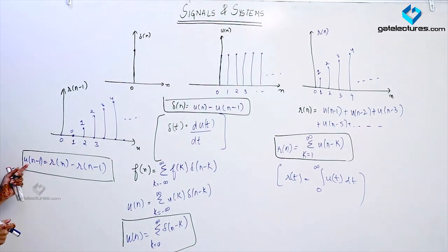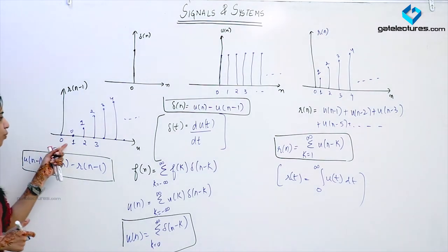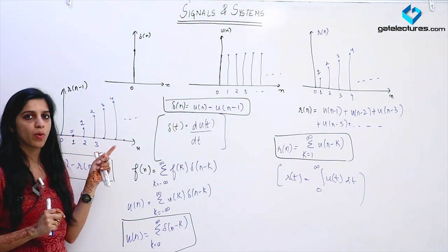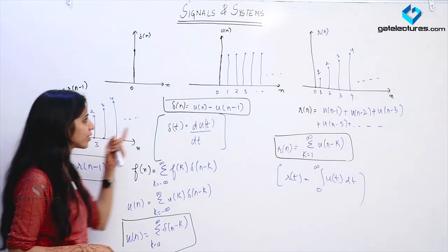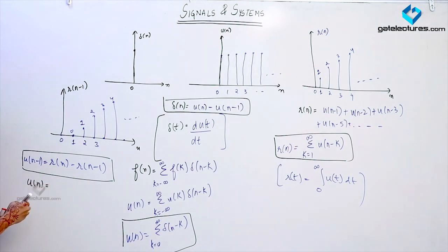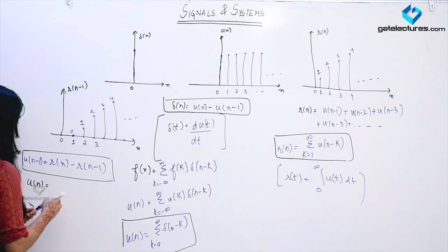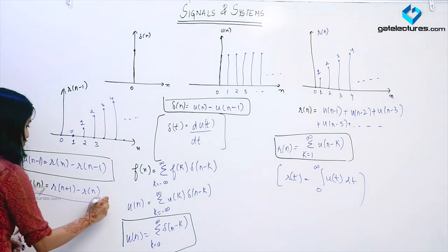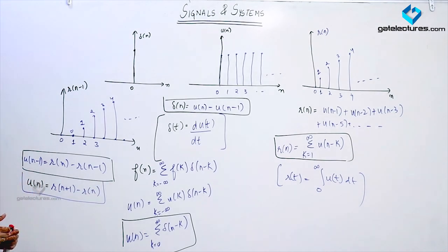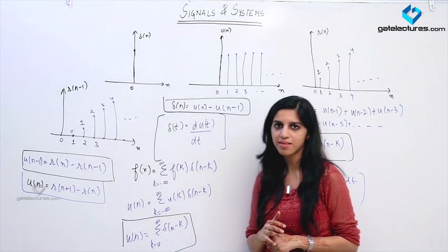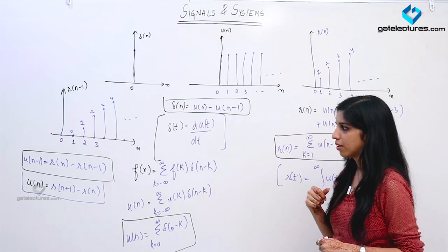So it is clear why we obtain u[n-1]: when we subtract these signals the impulse occurs from n equal to 1, and at n equal to 0 both signals have value 0. So if I want to obtain u[n], what I need to do is R[n+1] minus R[n]. This is how you can obtain u[n]. This is how we represent these three basic signals — unit impulse, unit step, and unit ramp — as difference and summation of each other.